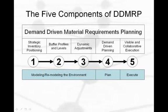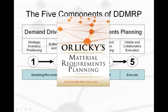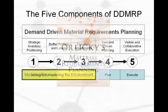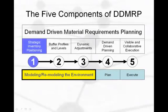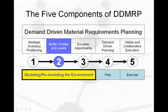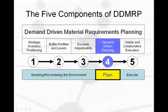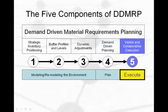To get your environment to DDMRP, a process has to be followed. The process is robust, innovative, and intuitive. It is detailed in the new Orlickies Material Requirements Planning, and there are five sequential components. The first three can be characterized as a design and modeling phase, and the design and model should not remain static — these steps should be reiterated frequently as circumstances dictate. The first three components are strategic inventory positioning, buffer profiles and levels, and dynamic adjustments. The fourth component is planning and supply order generation logic, and the last component is highly visible and collaborative execution.